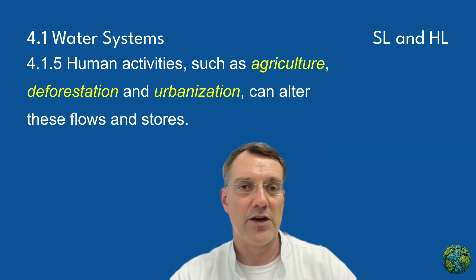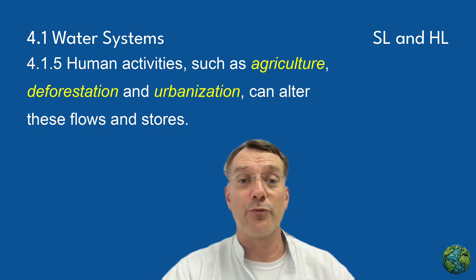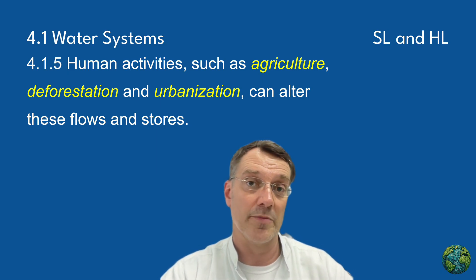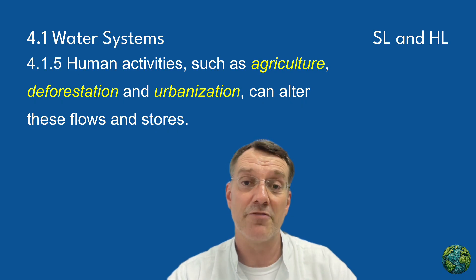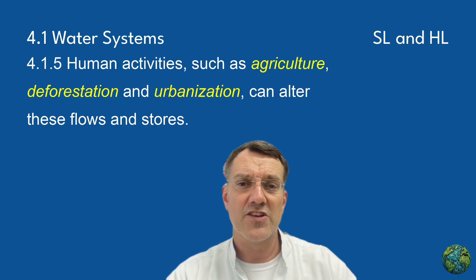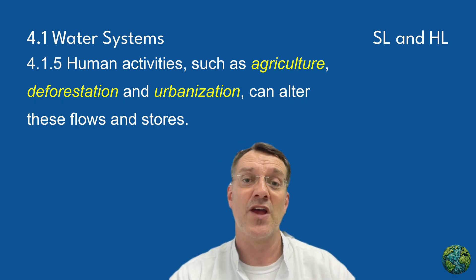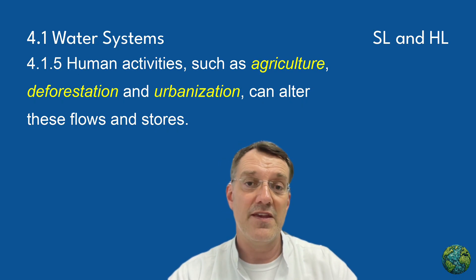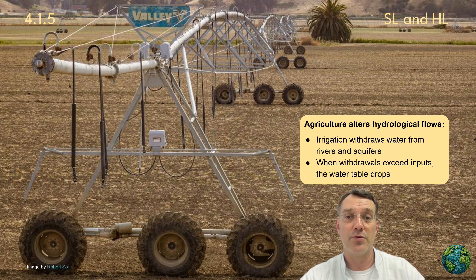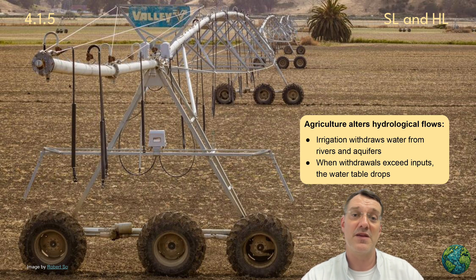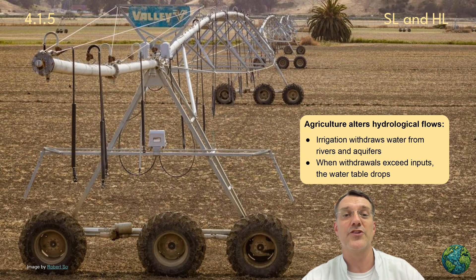Human activities can significantly alter the flows and stores in the hydrological cycle. We're going to examine three key activities: agriculture, deforestation, and urbanization. Agriculture alters hydrological flows in many different ways. Irrigation withdraws water from rivers and aquifers, often reducing natural stream flow. Much of this water is lost to evaporation, especially in open irrigation canals and with inefficient irrigation methods. When water withdrawals for agriculture exceed natural inputs, the water table drops. This is happening in many regions worldwide where groundwater is being pumped faster than it can be naturally replenished. The Ogallala Aquifer in the central United States, for example, is being depleted at an alarming rate due to intensive irrigation for crop production.